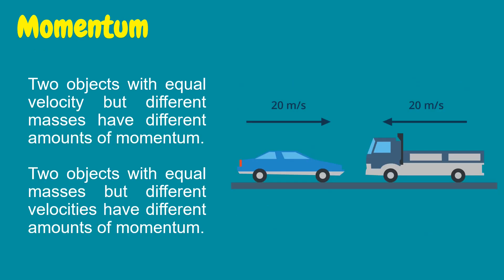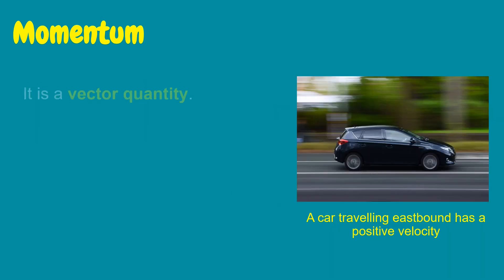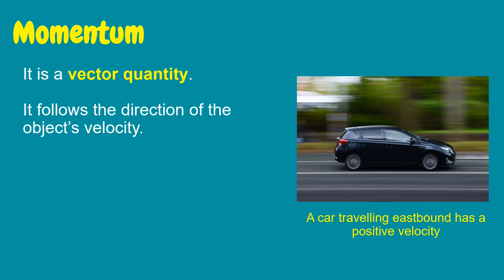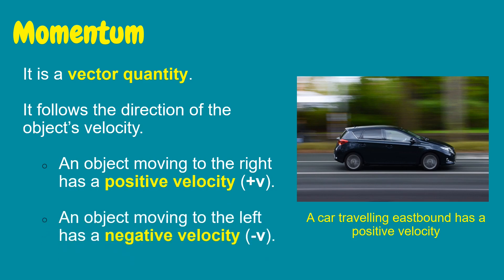Two objects with equal velocity but different masses have different amounts of momentum. Two objects with equal masses but different velocities have different amounts of momentum. In our example, despite having equal velocity, the truck has a higher momentum than the car because of its mass. Momentum is a vector quantity because it follows the direction of the object's velocity. An object moving to the right has a positive velocity, while an object moving to the left has a negative velocity.